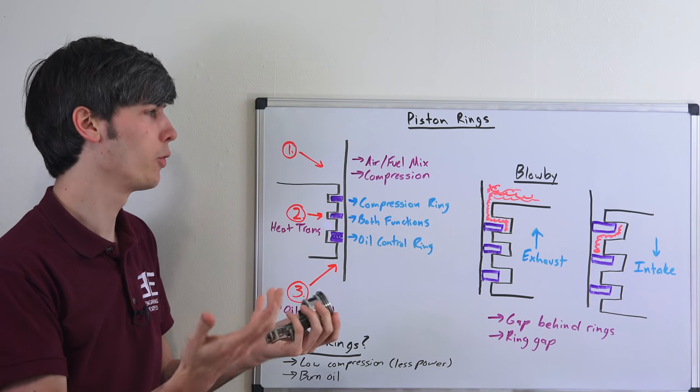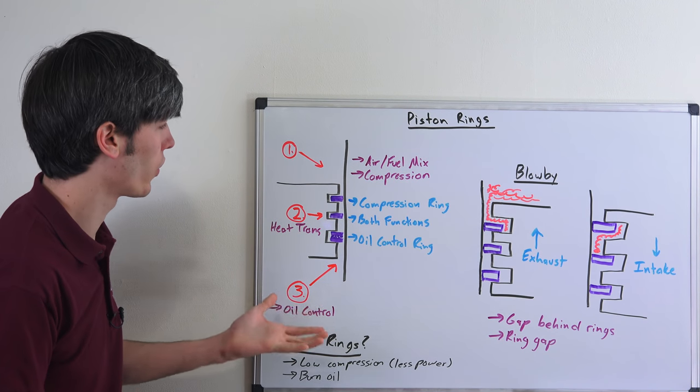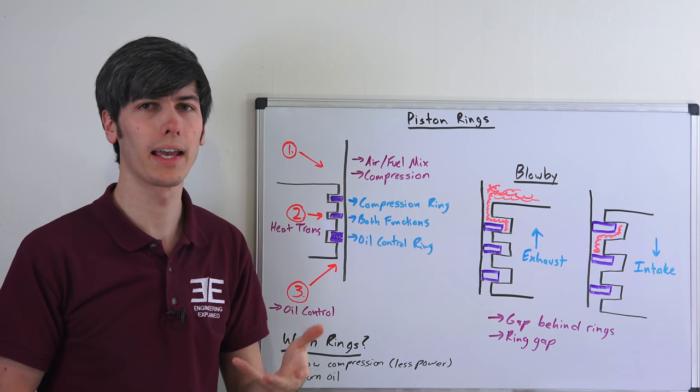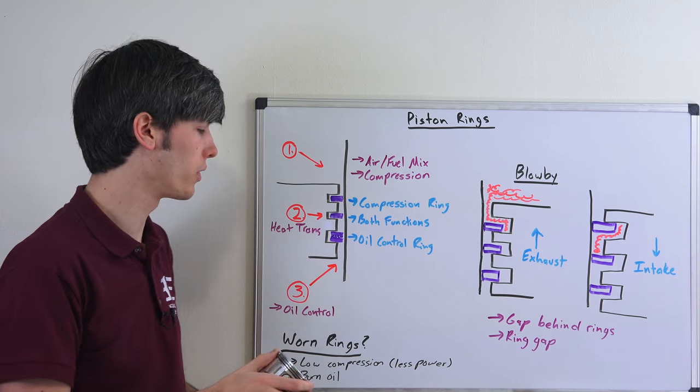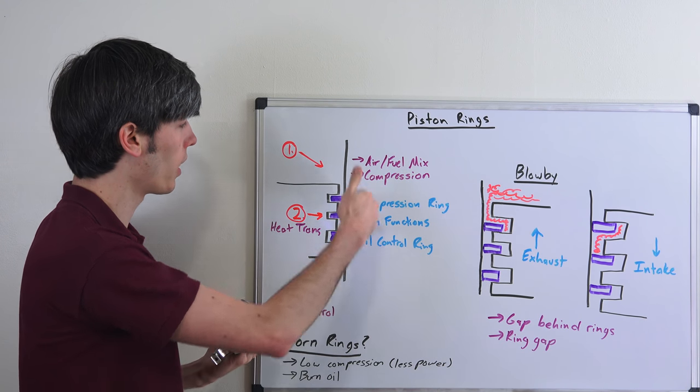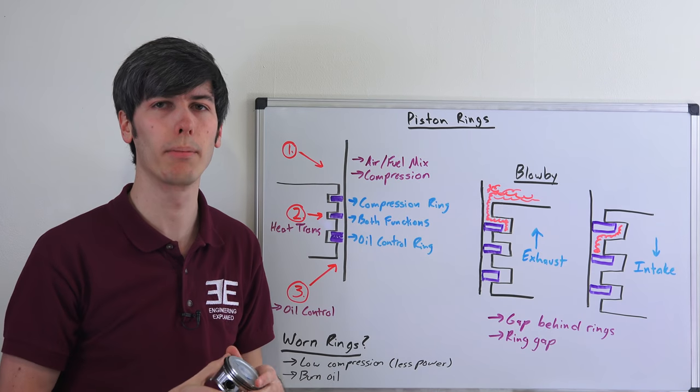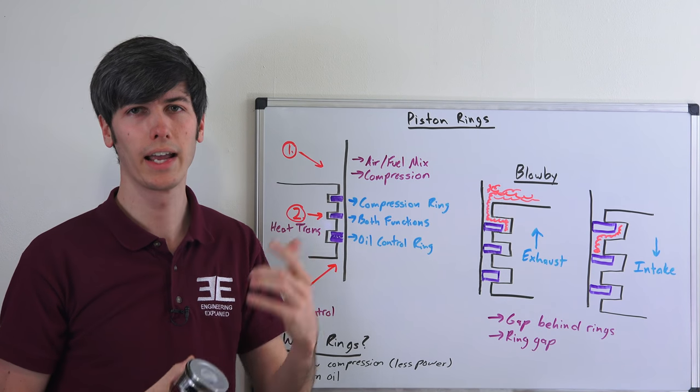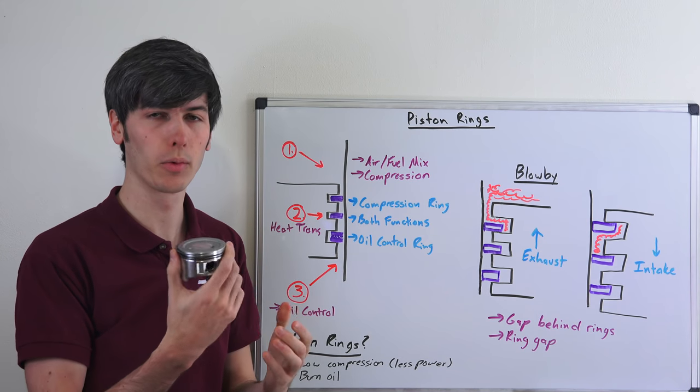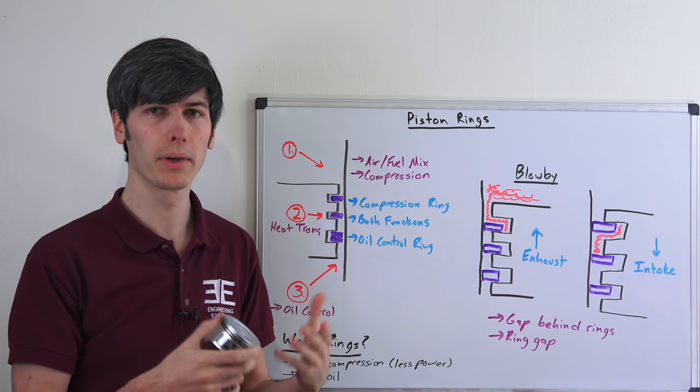So what happens if your piston rings have worn out? You're going to have two problems occur. First of all, you're going to have low compression, and as a result of low compression, the amount of power you make and the efficiency of the engine is going to go down. You're also going to be burning oil because some of that oil isn't going to be scraped off and it's going to be making it into your combustion chamber. Less power and burning oil, so it's really not a great problem to have. Unfortunately going in and replacing these is going to be expensive because you pretty much have to tear down the whole engine.